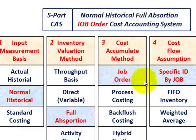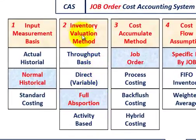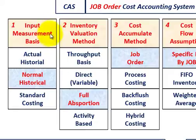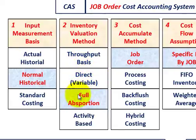We went through an example using this normal historical full absorption job order cost accounting system. The point is that you can actually design different cost accounting systems, or at least know what to look for when setting up your cost accounting systems or evaluating problems. You really have these five different parts for each cost accounting system to be concerned with. You can design systems through the selections here — not all are compatible, but you can take certain elements from each and match them up.